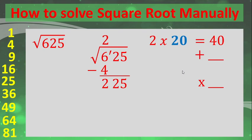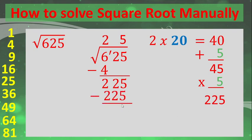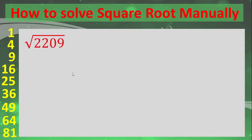Now think of one number: what number do I add to 40 and then multiply by that same number to get 225? The answer is 5: 40 plus 5 is 45, and 45 times 5 is 225. Put 5 in the answer, subtract 225, and 225 minus 225 is 0. Therefore the square root of 625 is 25.